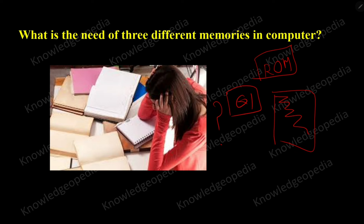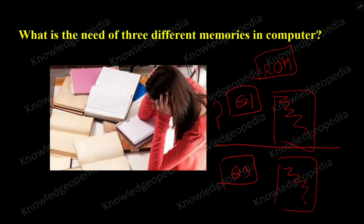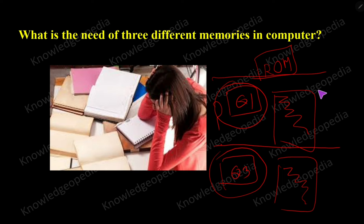Let us say question number one she answers quickly. For another question — say question number three — she is not able to recall the answer, but it is in some textbook. She will try to find it in the index, locate where it is available, and then write the answer. Which case will take more time? Definitely question number three. For question number one it will take less time. The answer for question number one is stored in her brain, and accessing that answer from the brain will take less time.